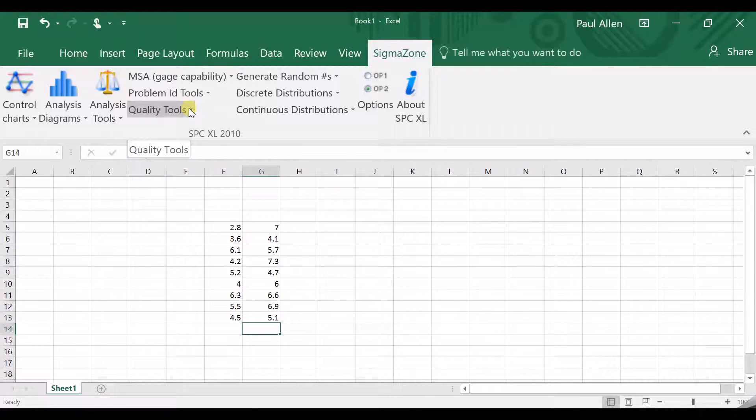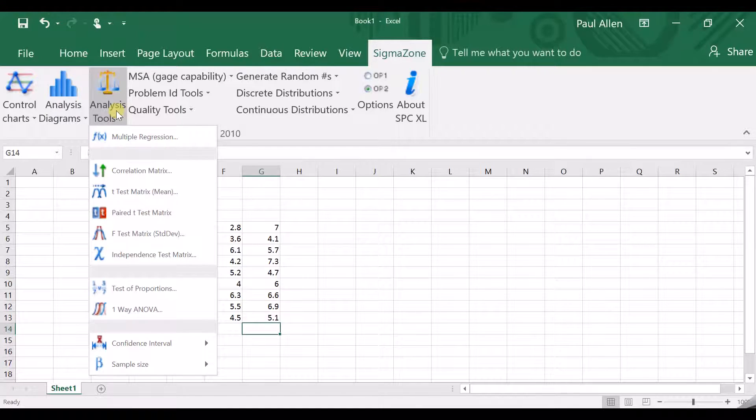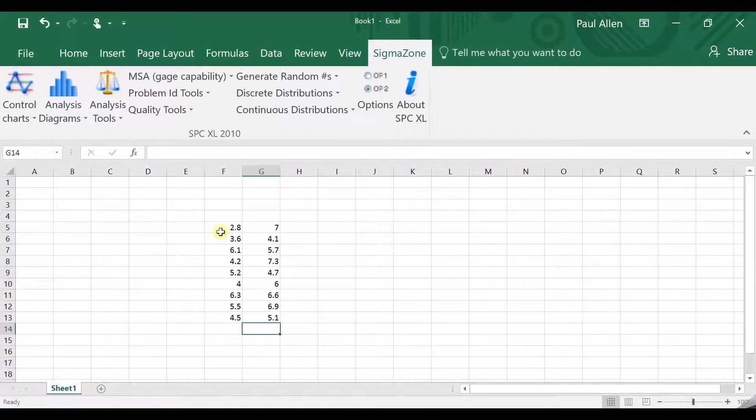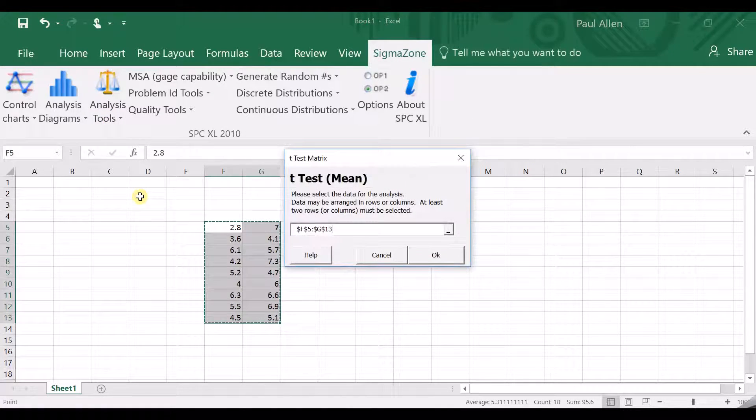So we've got the two data sets. I've just put them in in two columns. You could put them in in rows, it really doesn't matter. And then what I'm going to do, I'm going to go to the analysis tools on my list. And I'm going to do a t-test. And look, it says t-test matrix mean in brackets. In other words, we are going to test whether the average has been shifted by a change in the temperature.